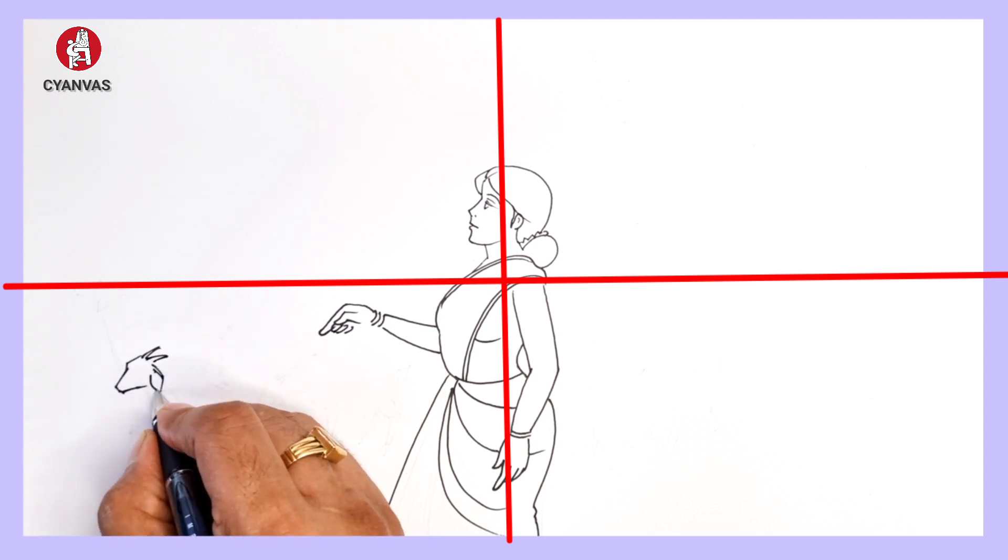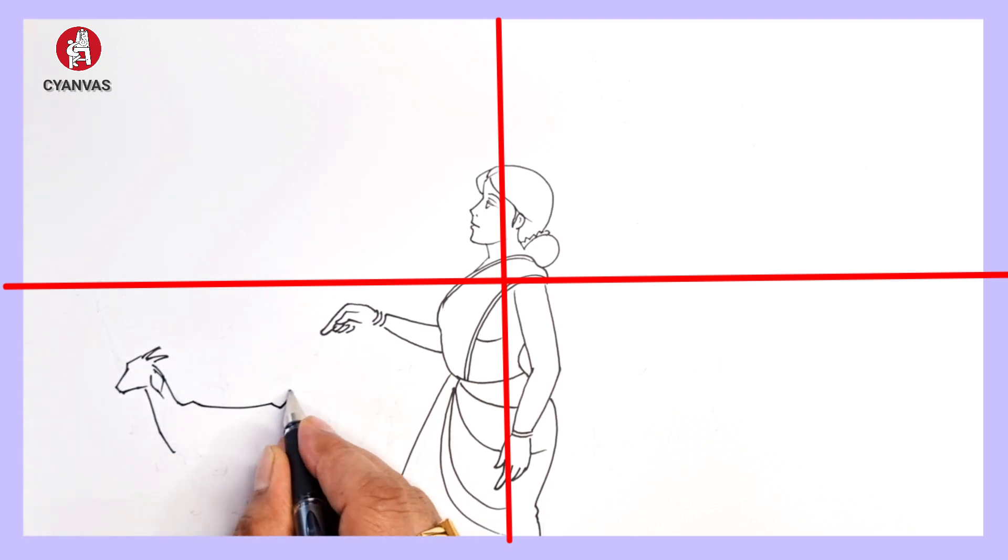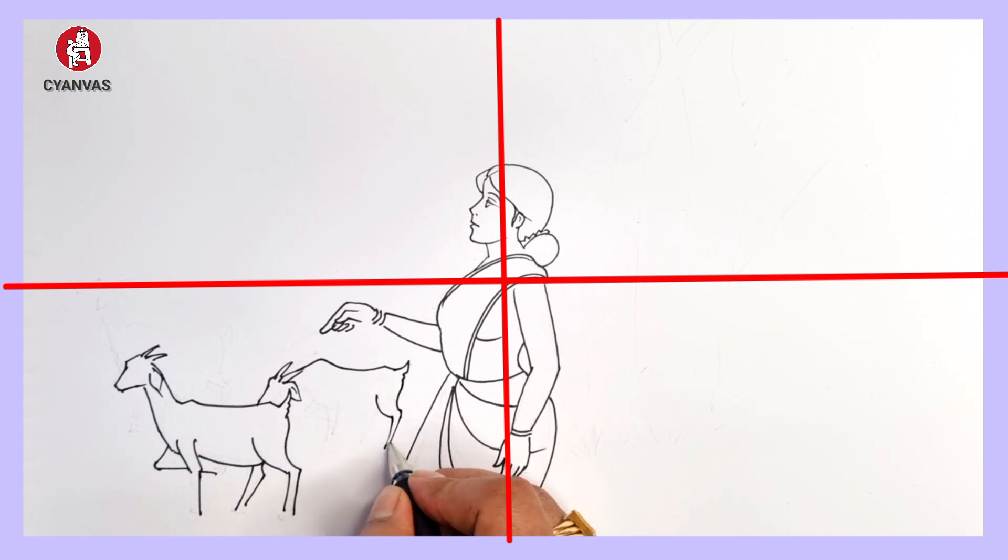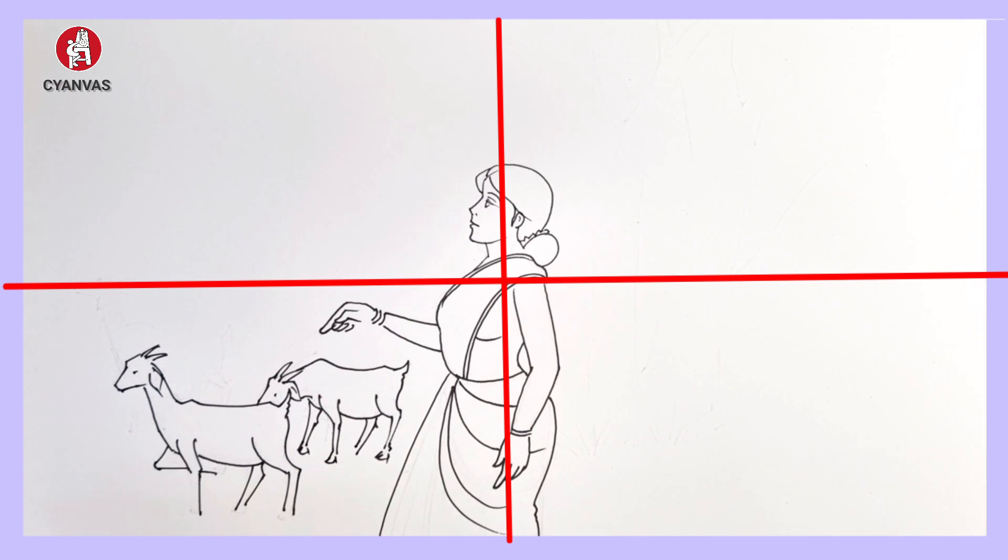When you start the goats, you have to follow the particular place, meaning from where you should start the goat. When you draw the goats, if you follow the steps, you can draw this very easily. We'll not draw only a single goat here.